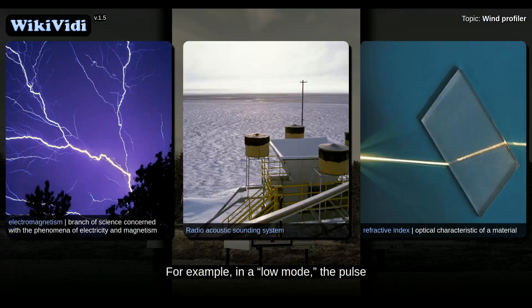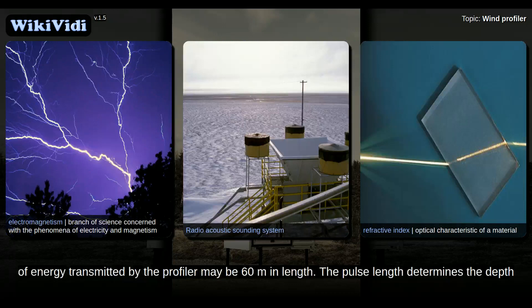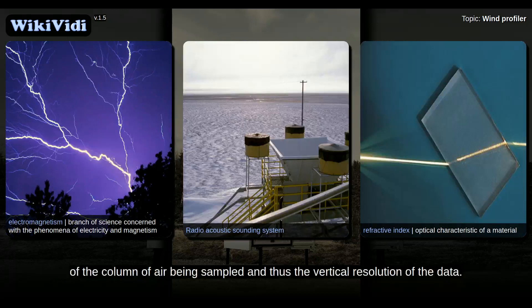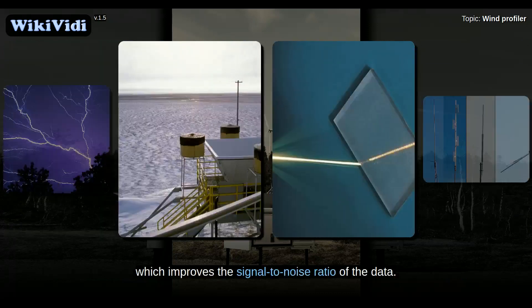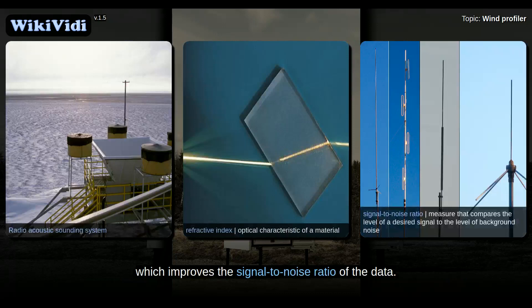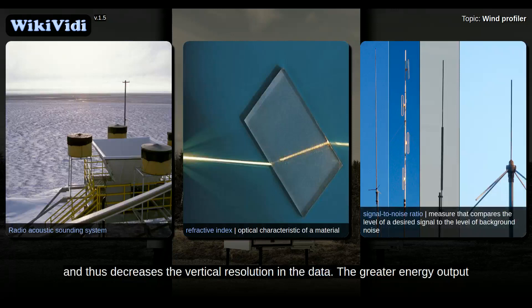For example, in a low mode, the pulse of energy transmitted by the profiler may be 60 meters in length. The pulse length determines the depth of the column of air being sampled and thus the vertical resolution of the data. In a high mode, the pulse length is increased, usually to 100 meters or greater. The longer pulse length means that more energy is being transmitted for each sample, which improves the signal-to-noise ratio of the data, but using a longer pulse length increases the depth of the sample volume and thus decreases the vertical resolution.